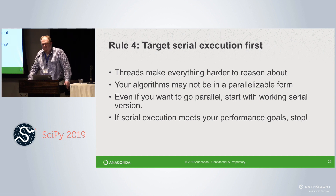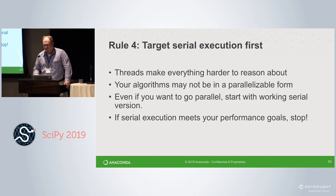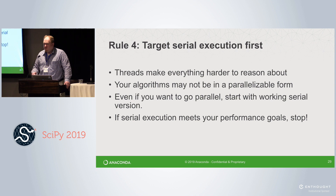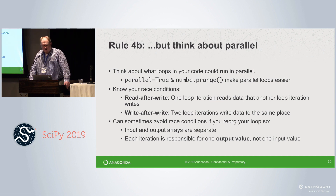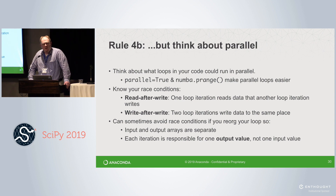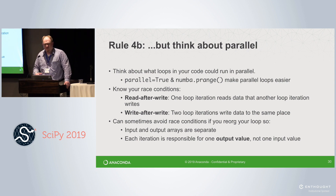Target serial execution first. You've heard a lot about how awesome parallel programming is, but don't get too crazy with that up front. Worry about optimizing the serial performance first, then think about parallelism. Threads make everything harder to reason about, and your algorithm might not be in a parallel form yet. If the serial version meets your performance goal, just stop — don't go parallel if you don't have to. But if you do want to think about parallel, we give you things to help: automatic parallelization of array expressions contributed by Intel, and a prange which is like range but loops run in parallel like OpenMP. However, you have to think about race conditions — read-after-write and write-after-write — because Numba won't save you from those.